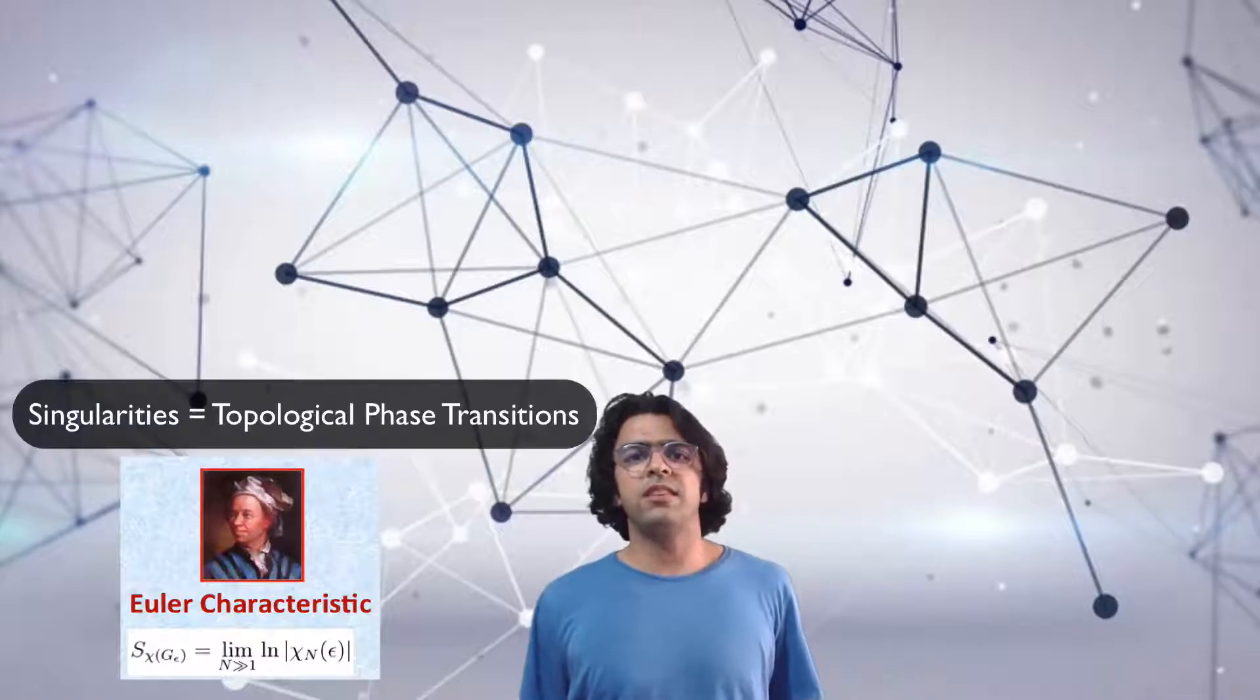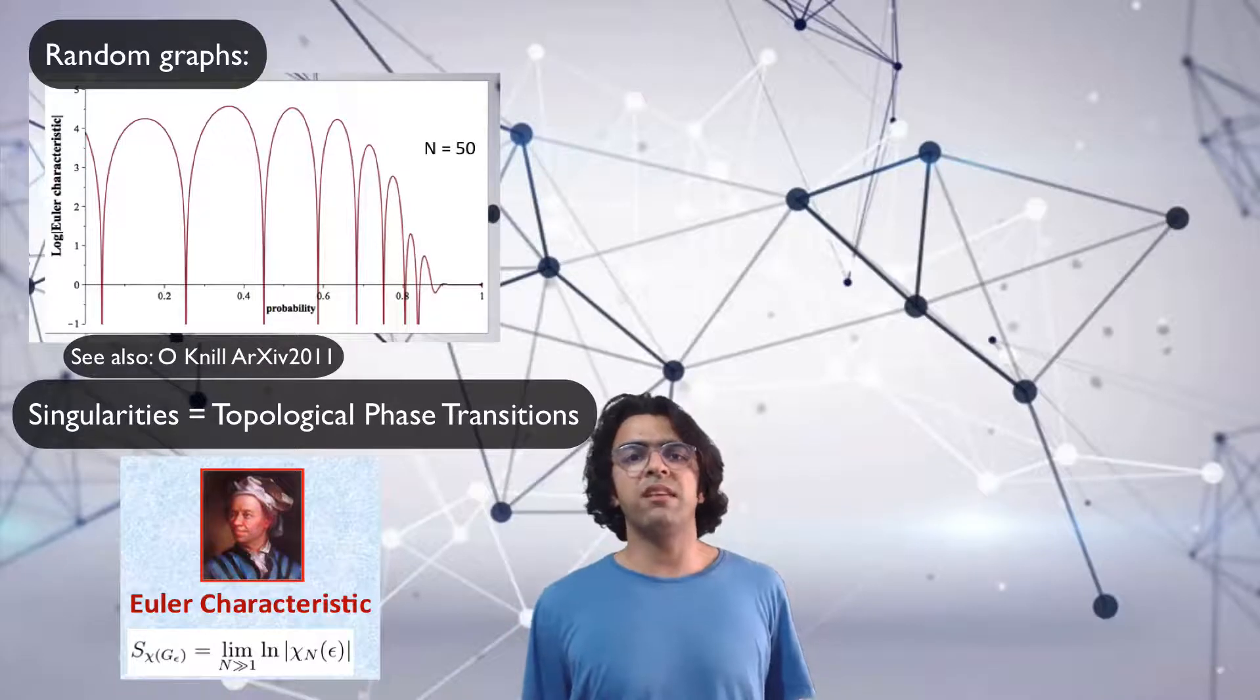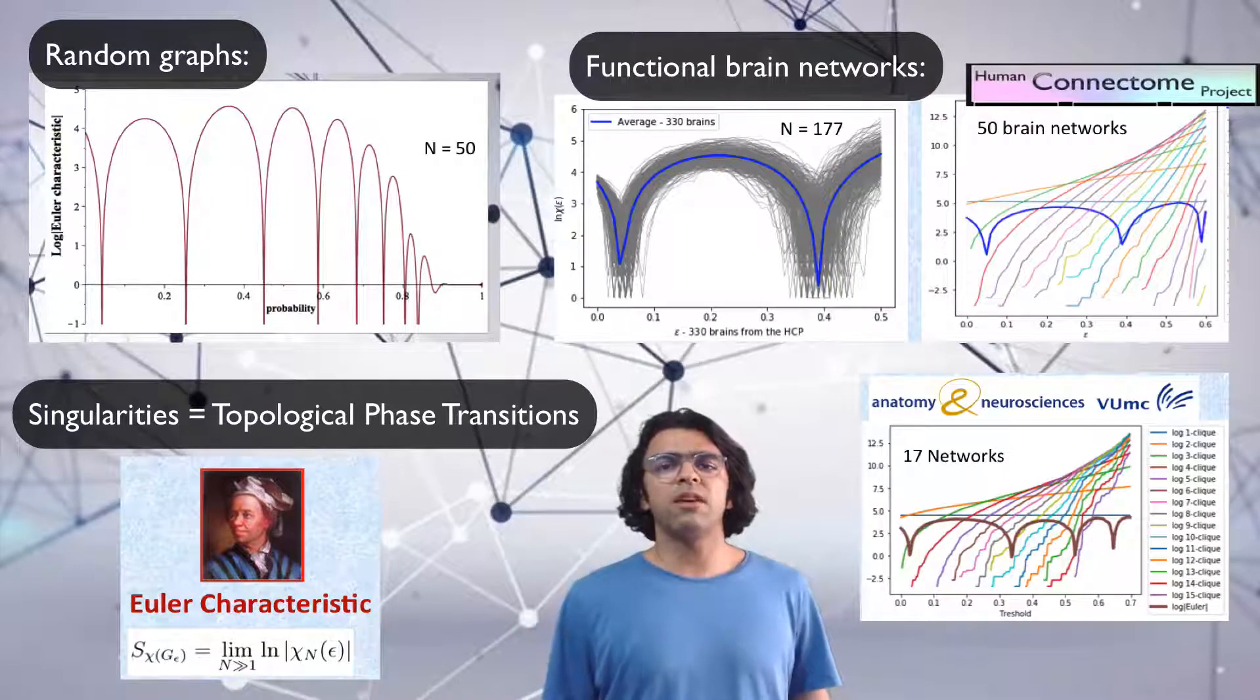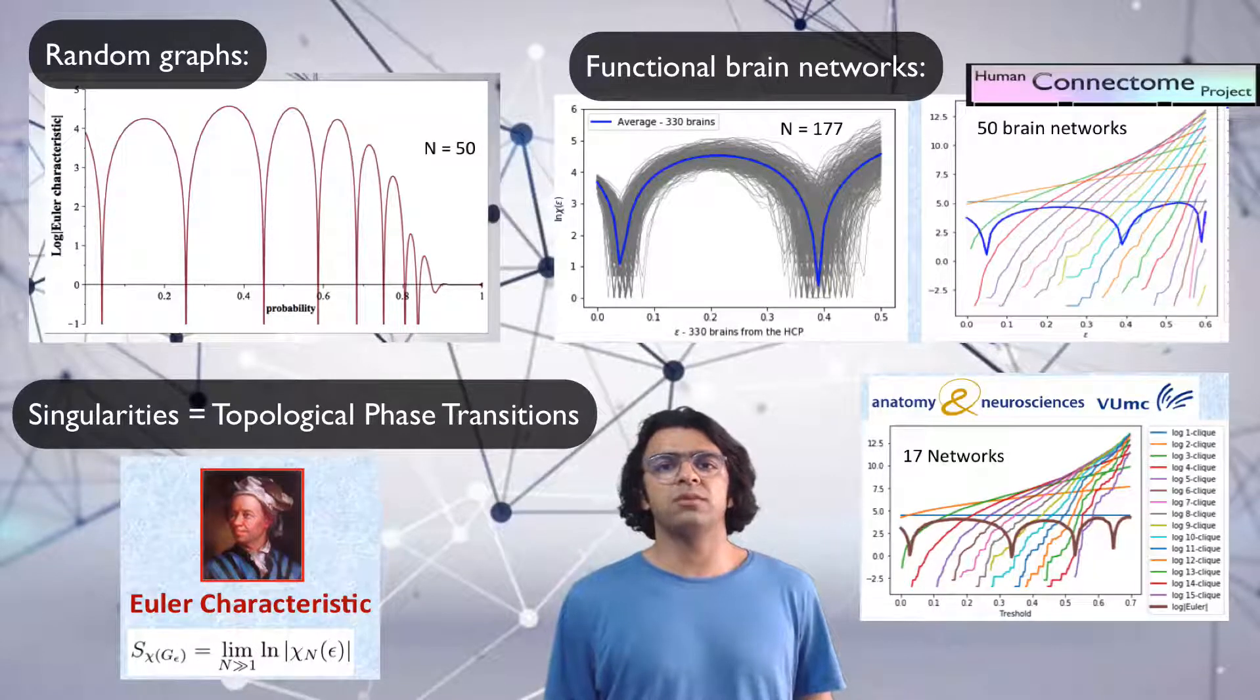By doing so, we detected topological phase transitions as singularities of the Euler characteristic, analytically in random graphs and numerically in functional brain networks. Our results provide strong arguments that the Euler characteristic has several potential applications in networks.